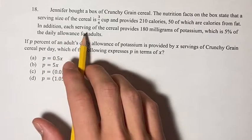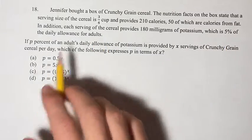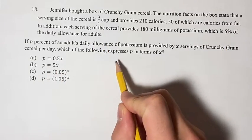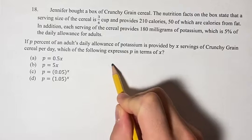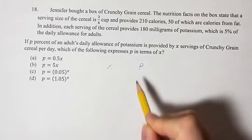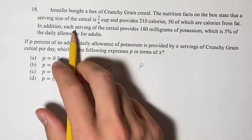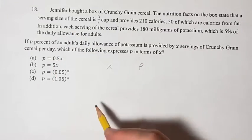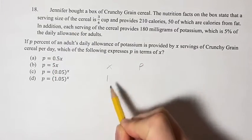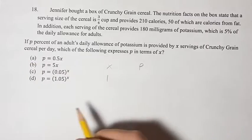If we're told that each serving provides 5% of the daily allowance, then in terms of x, the number of servings, p, we can come up with a couple of values. So a serving provides 5%, so when x is 1, we have one serving, the percent of potassium is 5.